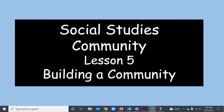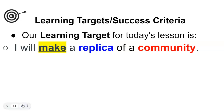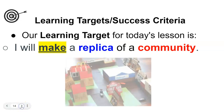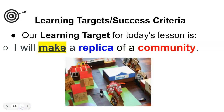Hello kindergartners, we're doing social studies community unit lesson five: building a community. Our learning target for today's lesson is I will make a replica of a community — a small representation of a community. I'm going to have at least five buildings in my community, and I can choose how I'm going to make my community.